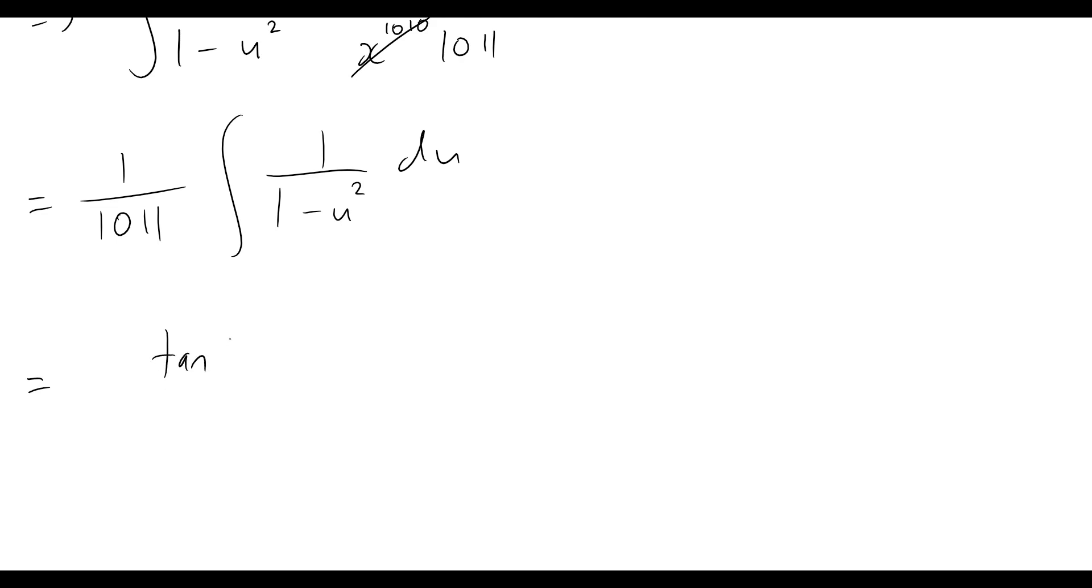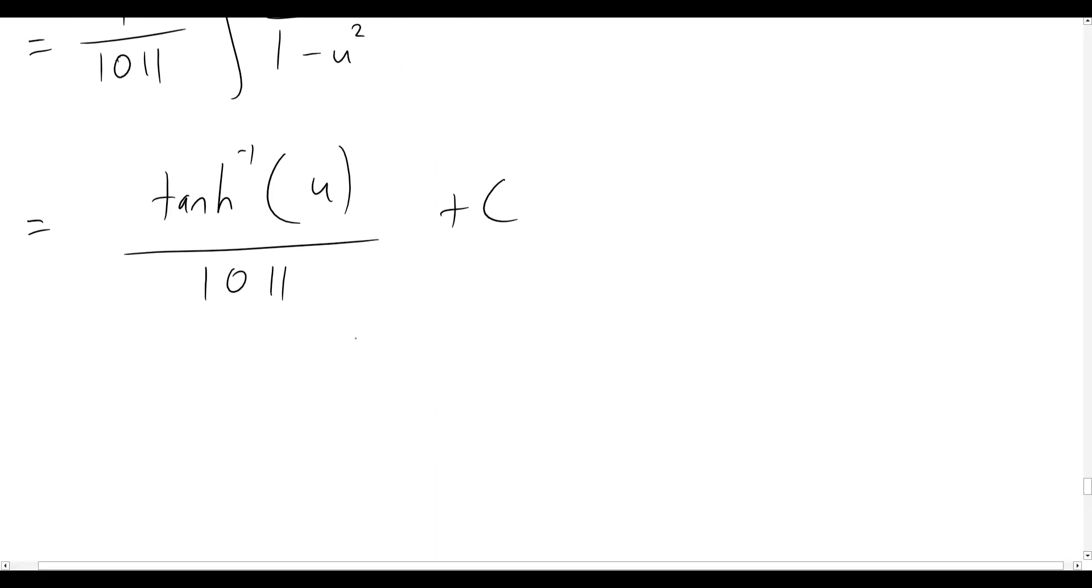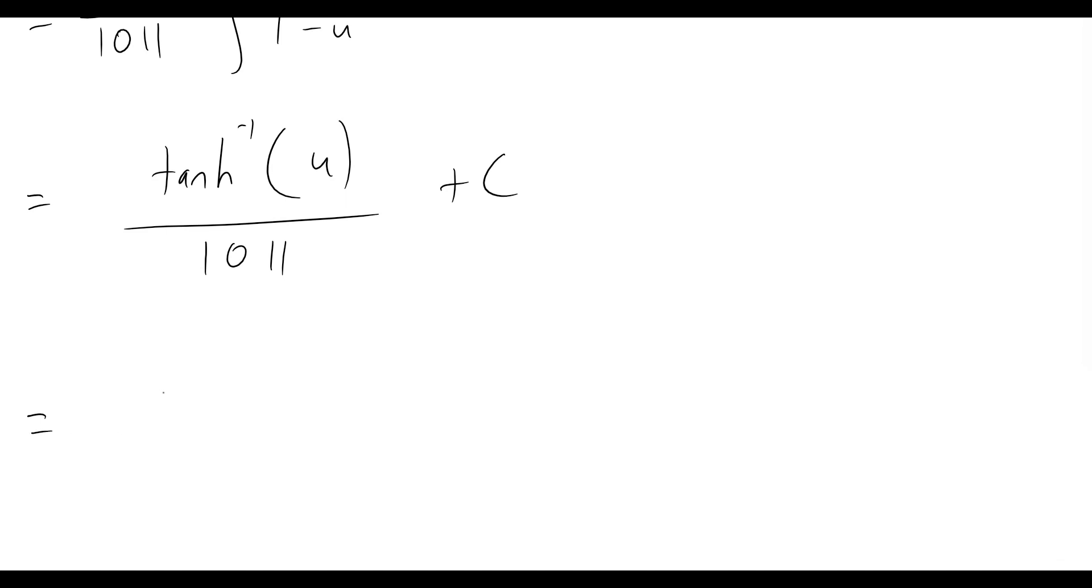We can just write it as tanh inverse of u over, we still had that 1011 plus c. And now let's not forget that we need to go back from u to x. So our final answer is hyperbolic tan inverse of x to the 1011 all over 1011 and then plus c, some constant there.